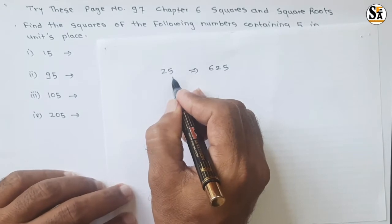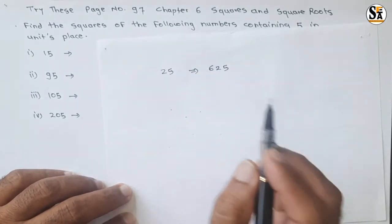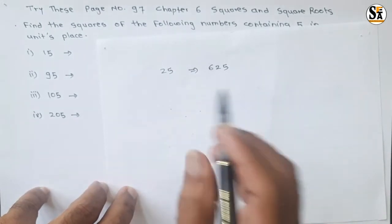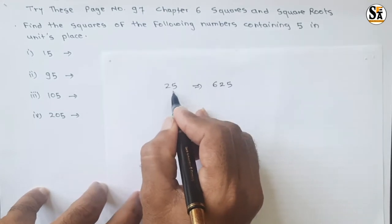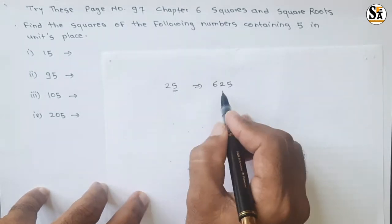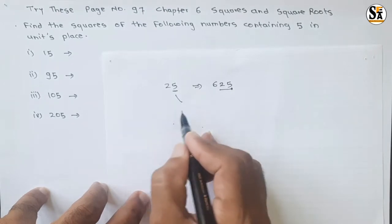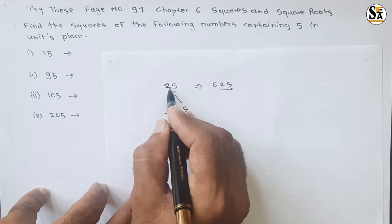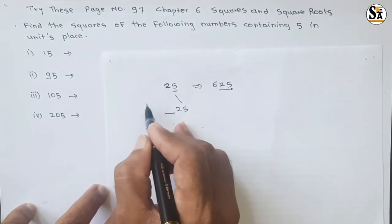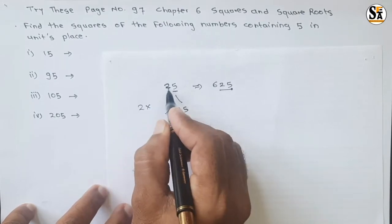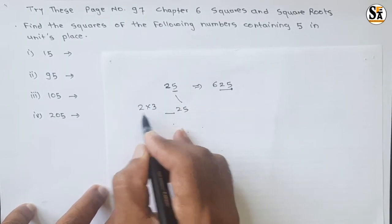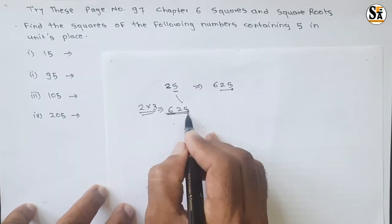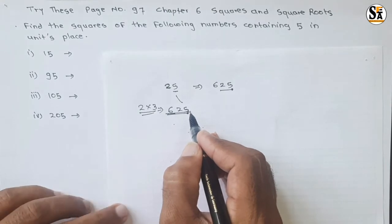But how is this derived? This pattern says: if there is 5 at unit place, then just write 25, and multiply the remaining number with the next number. The remaining number is 2, so multiply 2 with the next number which is 3, and the multiplication is 6. This pattern is useful for calculating squares of numbers having 5 at unit place.